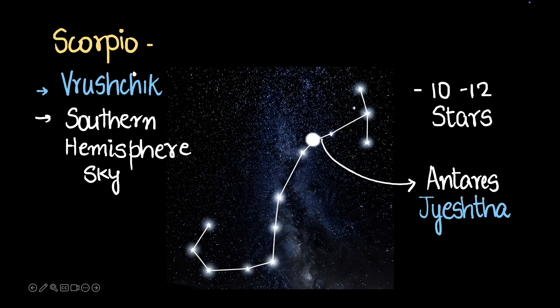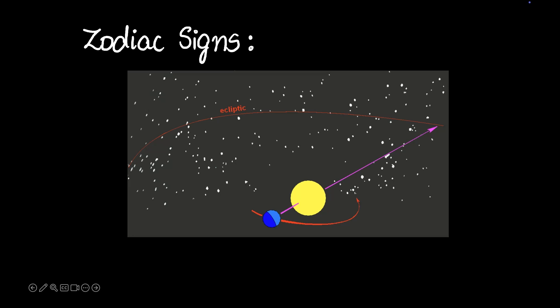Okay, so those were a few constellations. Now let's get into the topic of zodiac signs or what we often call sun signs. To understand this, let's get into the history of how this whole thing came to be. So let's say this is the sun and this is the earth revolving around the sun in some path like that. Okay, that's the setting.